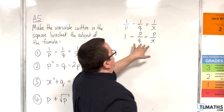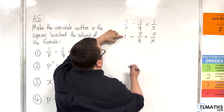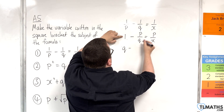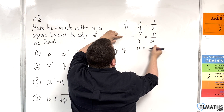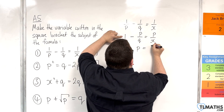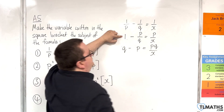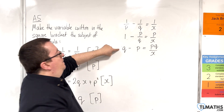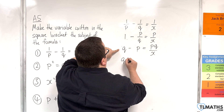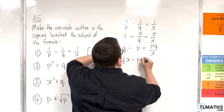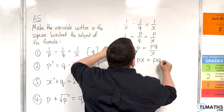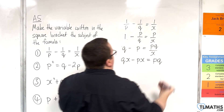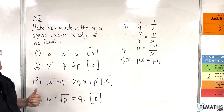Now we're going to multiply everything through by Q. So 1 times Q is Q. Multiplying this by Q gets us just the P. And multiplying this by Q gets us PQ over X. Now I'm going to multiply everything through by X. So I'm going to get QX take away PX is equal to PQ. You could have gone straight from that first line by multiplying everything through by PQX.